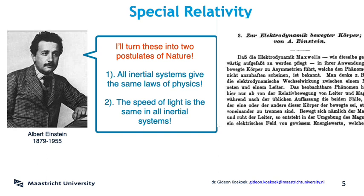So it looks as if Maxwell's equations tell us two things: the speed of light is the same in all inertial systems, and all inertial systems give the same physical outcomes even if they don't agree on the amount of E and B fields. These two puzzles really rattled the physicists at the end of the 19th century. Famously Einstein came along, still a young man at the time, and he flipped the script. Instead of trying to explain why the speed of light is the same in all inertial systems, he simply assumed that this was the case and worked his way from there. And these are now known as Einstein's two postulates: all inertial systems give the same physics, and the speed of light is the same in all of them. He wrote this up in his famous 1905 paper on the electrodynamics of moving bodies.